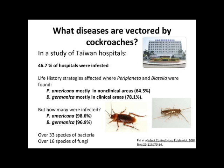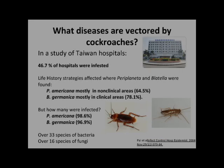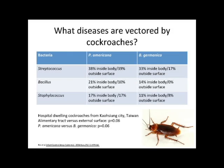In a study done recently in Taiwan, in Taiwanese hospitals, 46.7% of hospitals were infested with cockroaches. The two common species were Periplaneta americana and Blatella germanica, the German cockroach, and they were infected with various pathogens. Over 33 species of bacteria and 16 species of fungi were present living on the cockroaches and inside their alimentary canals. Of the common ones we might be most concerned about — things like Staph and Strep — many of these roaches had them inside their guts as well as on the outside surface of their bodies.